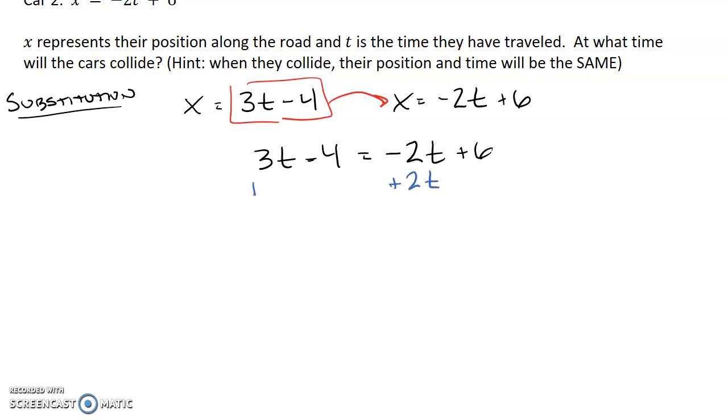I'll get the t's on the same side by adding 2t. And in the same step, I might want to add the 4 to the other side. I'm just collecting all my like terms. I end up with 5t equals 10. And when I divide by 5 on both sides, I get t equals 2.